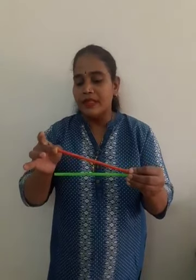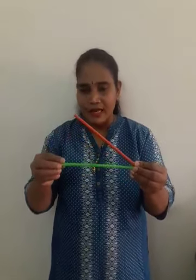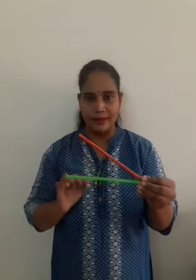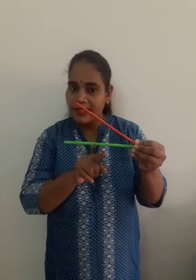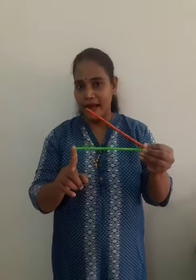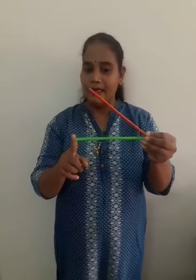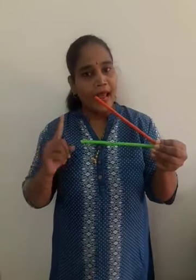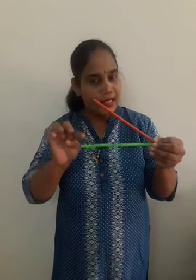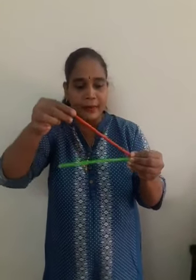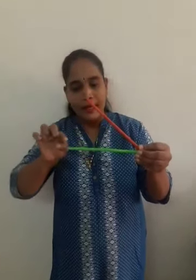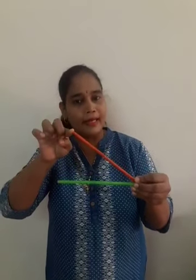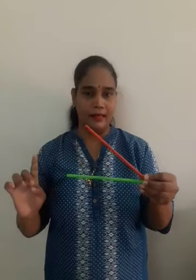Now if I turn one stick, keeping the other fixed, an acute angle is formed. An acute angle is an angle whose measure is greater than zero degree and less than 90 degree. So the measure of this angle is greater than zero but less than 90 degree, and this angle is called an acute angle.